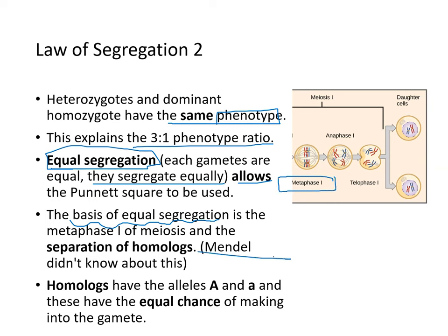Mendel didn't know about meiosis. Meiosis is when you separate homologs inherited from mom and dad, and they can line up differently — mom on the left and dad on the right, or vice versa. The homologs have alleles big A and little A, and these have equal chance of making it into the gamete cell.